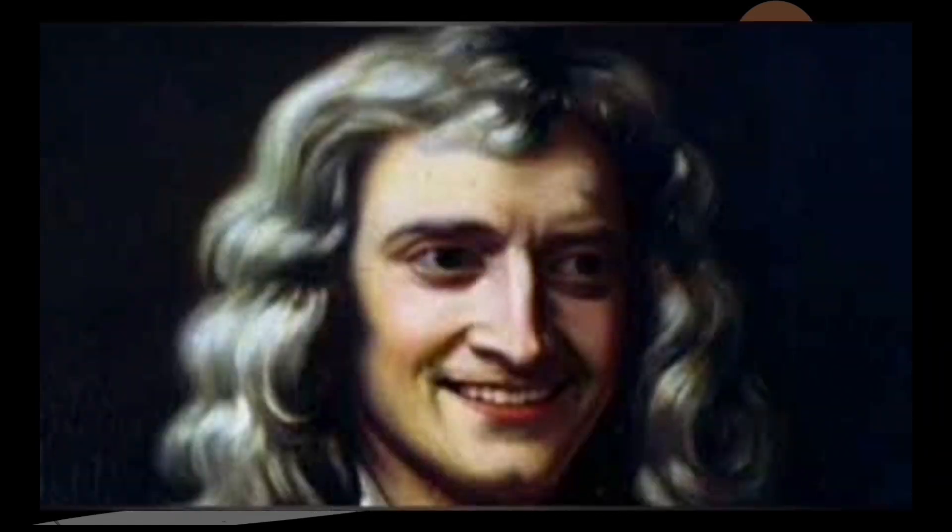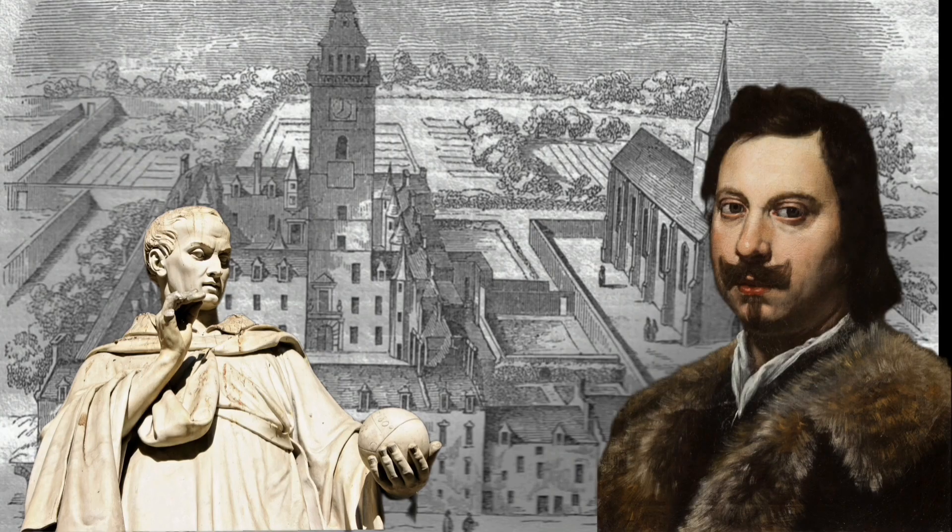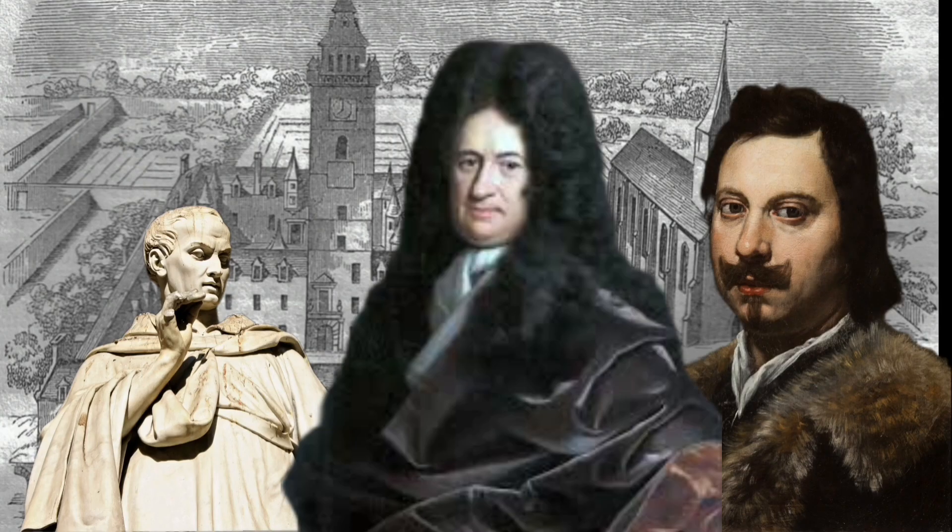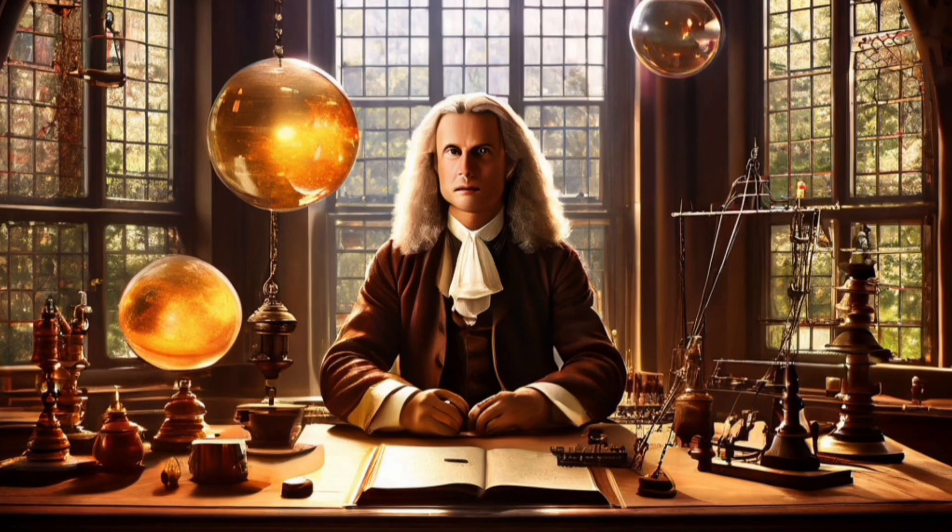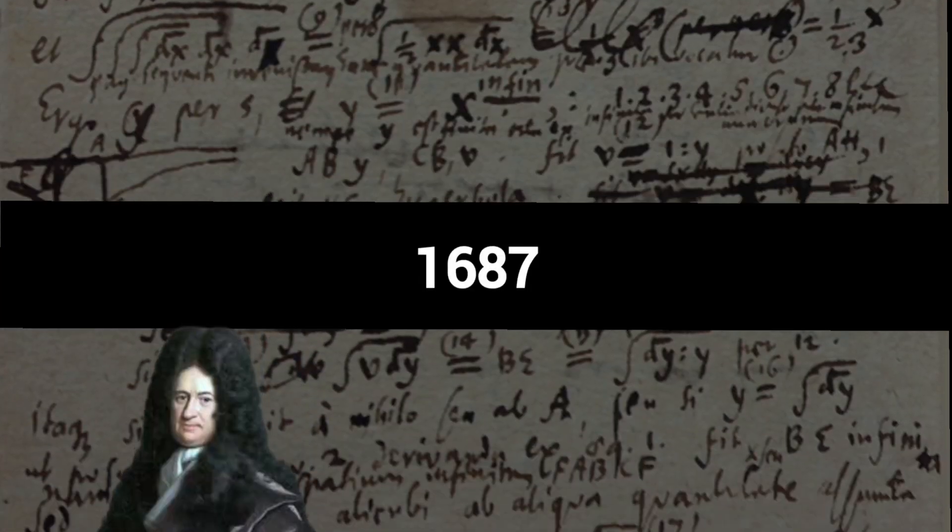But Newton was not alone in the race in 17th century. There were Cavalieri, Fermat and the most prominent and the controversial one was Leibniz. While Newton started working in 1666, but didn't publish anything until 1687, Leibniz started working on his form of calculus in 1674 and published his first paper in 1684 before Newton.